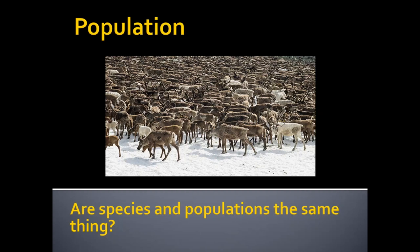In later discussions, we'll talk about how we draw those lines and why it's not always as easy as it might seem. For now, just know that a population is a group of biological organisms similar enough to group together — we sometimes call those groups species. Here we have a population of caribou, or reindeer — two words for the same species. So: evolution is change in a population.